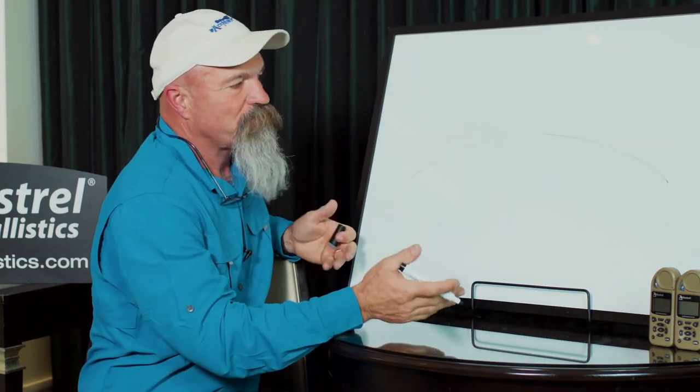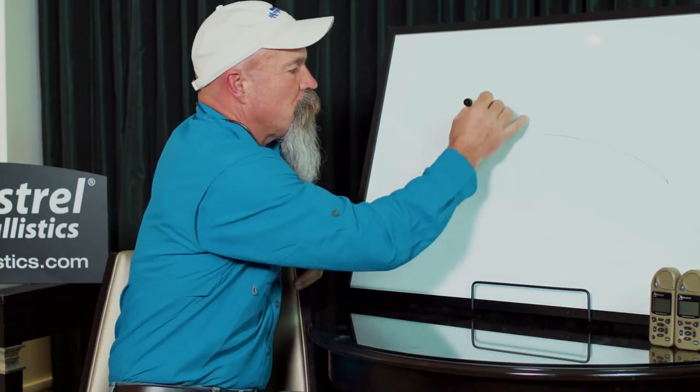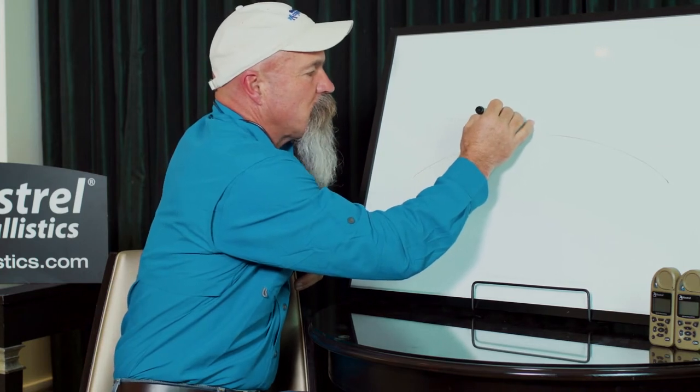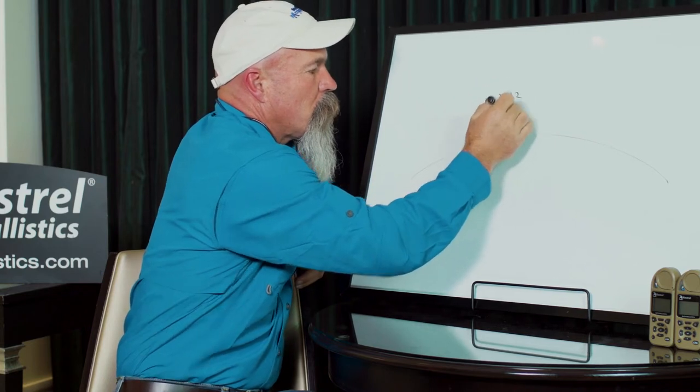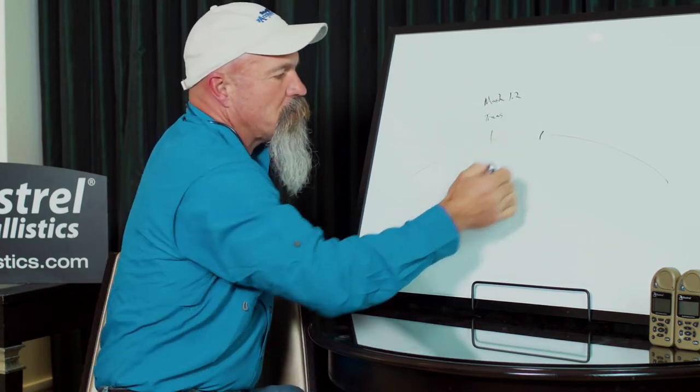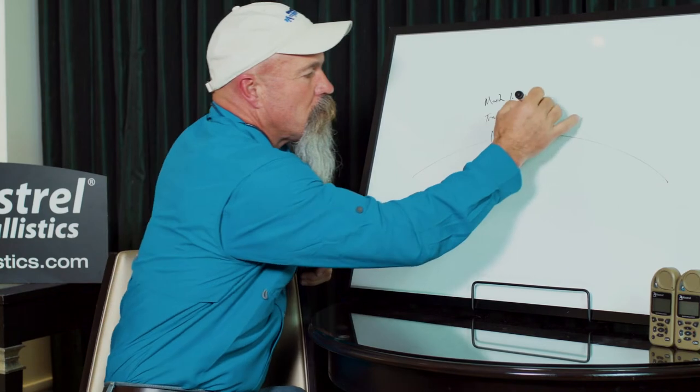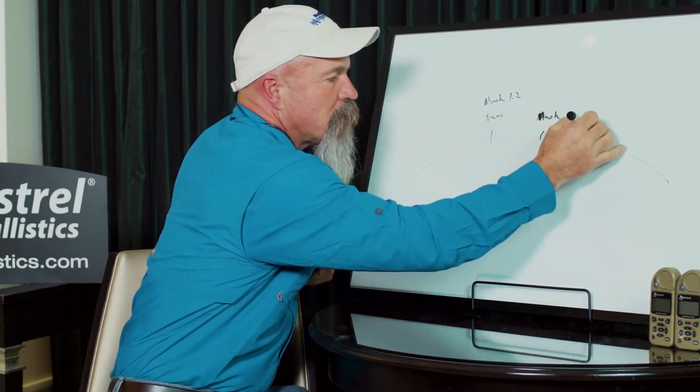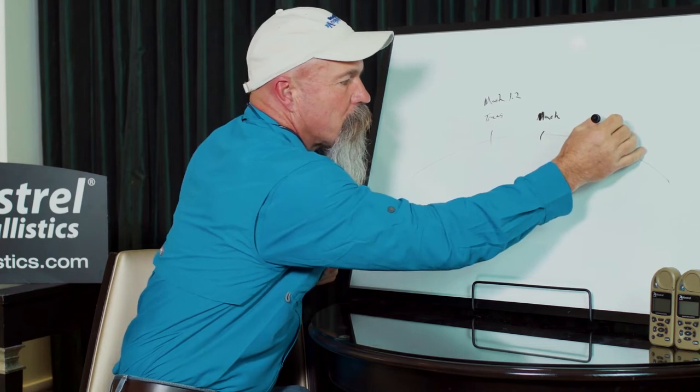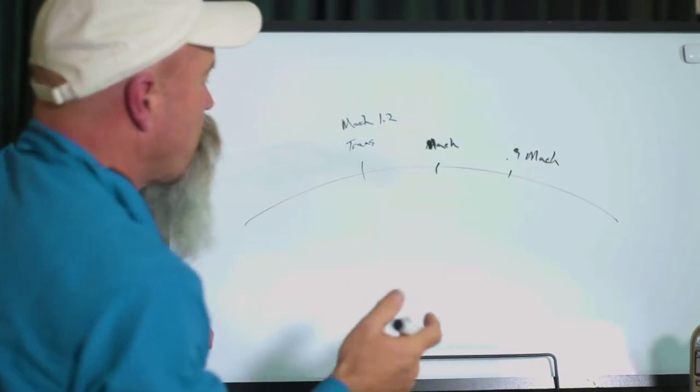So we're going to draw this out to where you can follow along. This would be a normal flight path of the bullet. Here we're just going to say this is trans. This is Mach 1.2. Here would be subsonic Mach 1. And we'll say this is 0.9 Mach. We'll talk about the importance of each one.